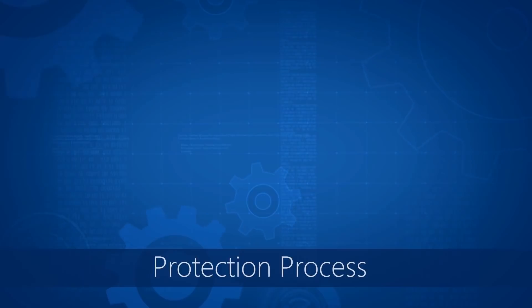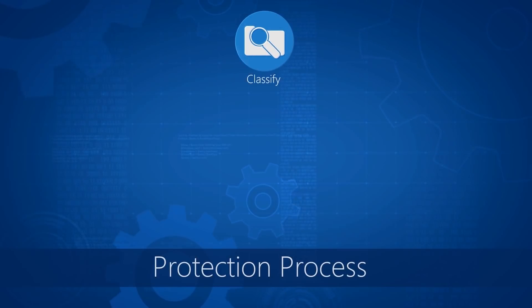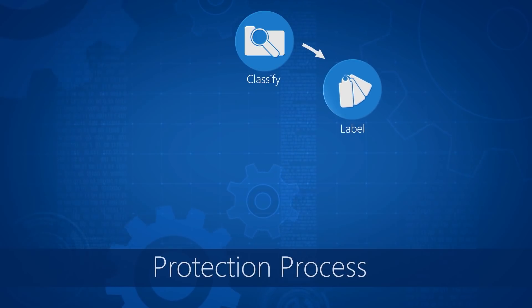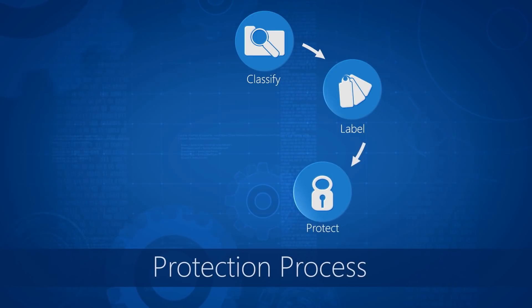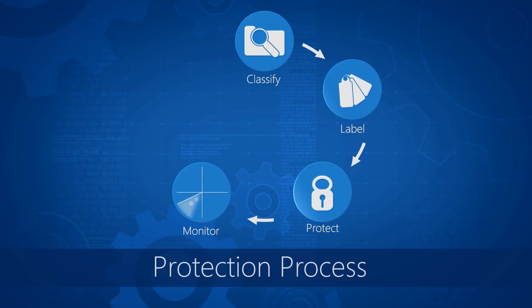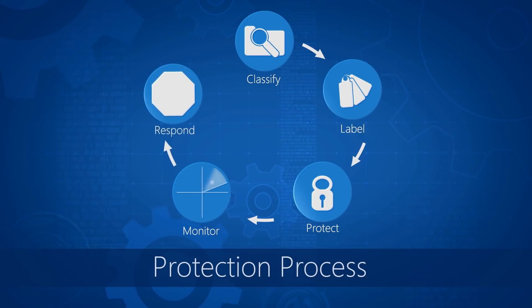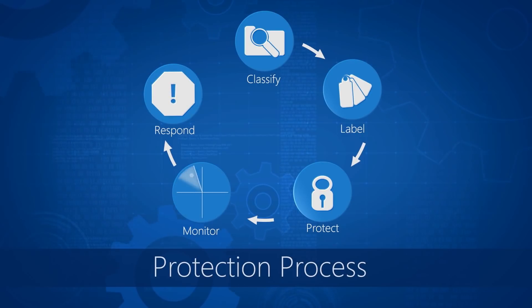So how does IT really get their arms around this, if they aren't protecting everything? We're going to help with a simple five-step programme. The first part is you'll classify your data — understand what is sensitive and what is not. That will result in labelling, so other systems can behave better knowing the sensitivity of the data. Third, if necessary, we'll protect the data. Now that you have a smaller set of sensitive data, you can monitor it for use. If the data is being abused, you can use some new technologies I'll show you later, or you can walk down the hall and talk to HR or deal with it some other way.